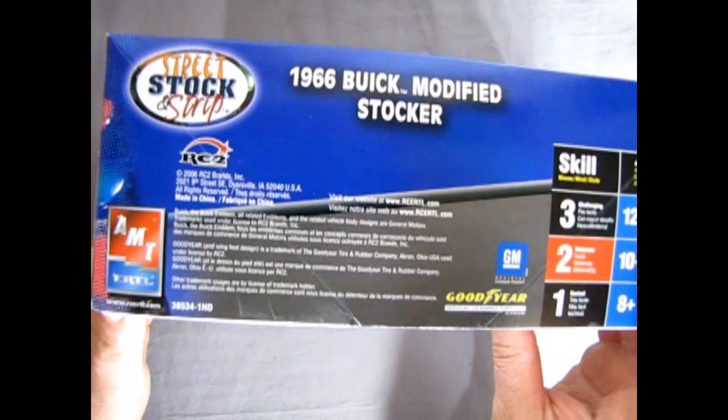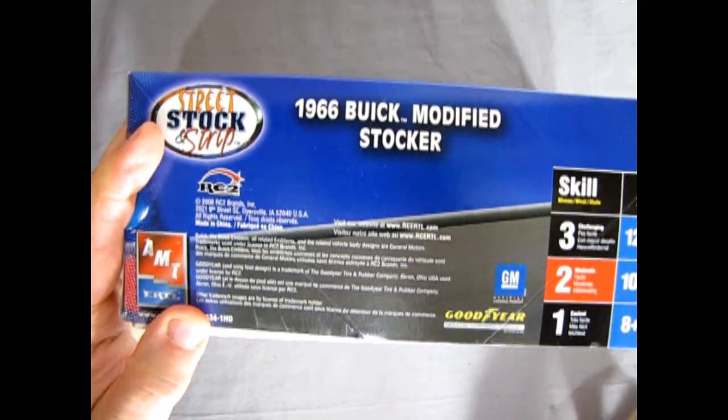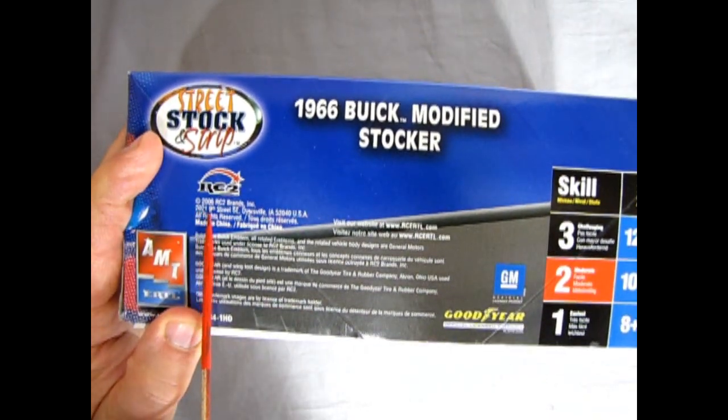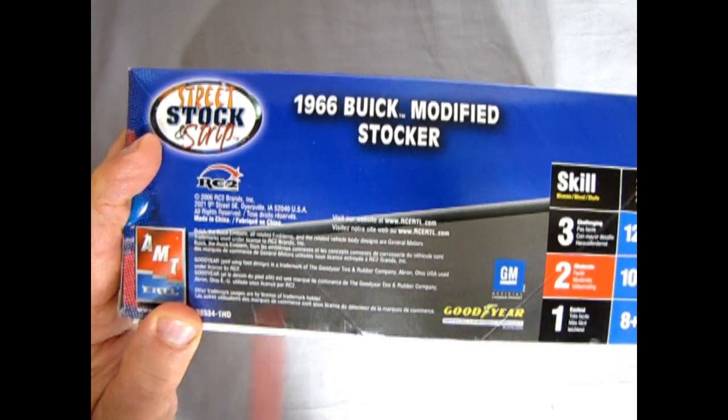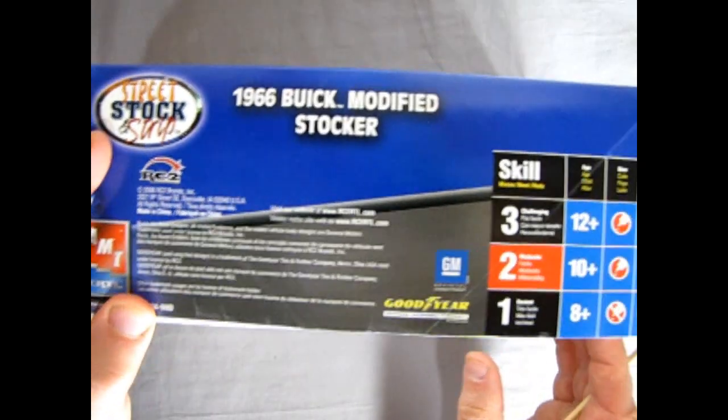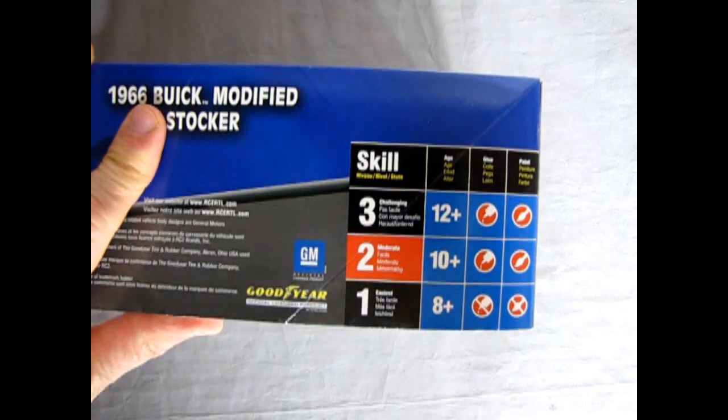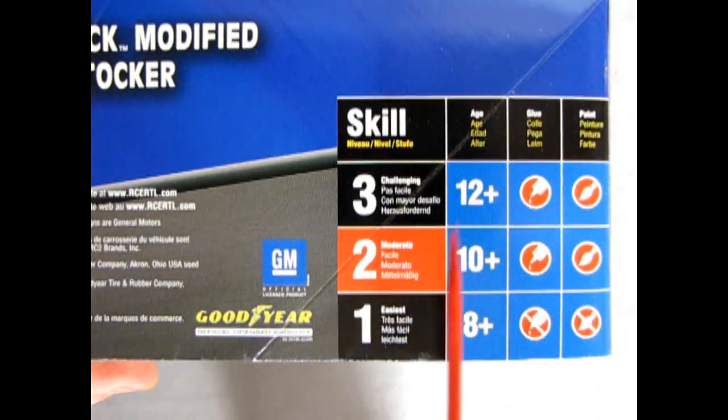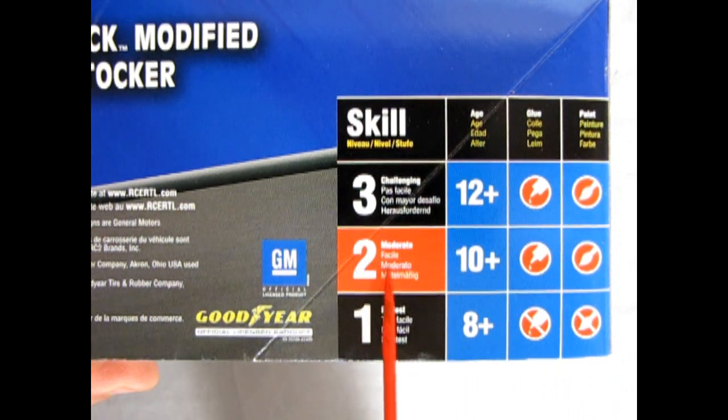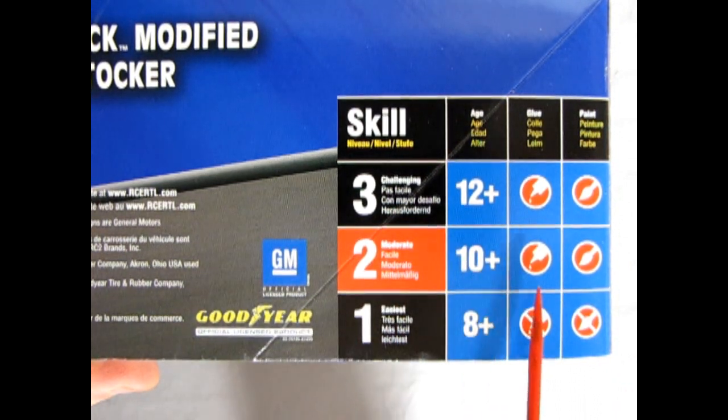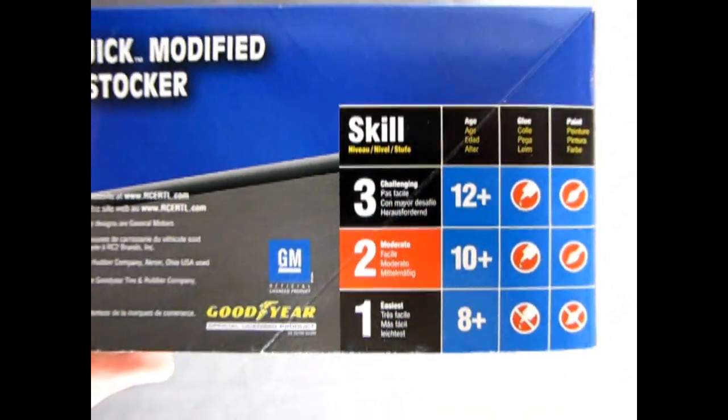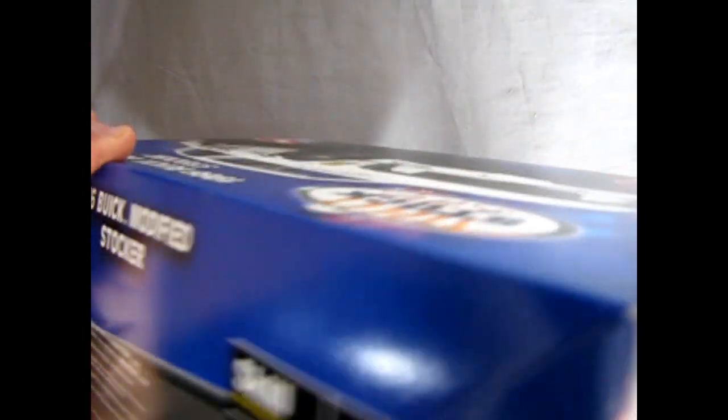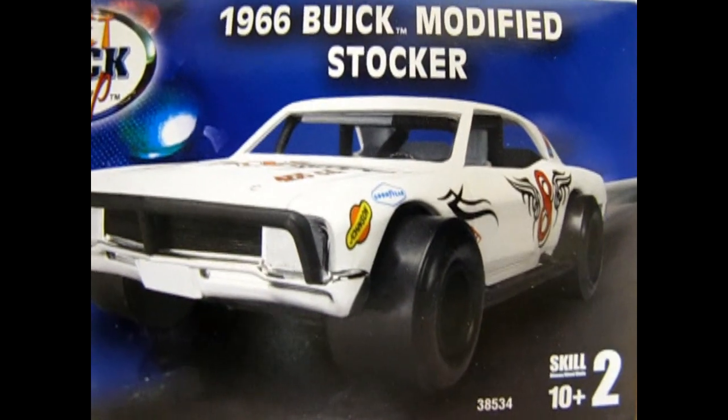And you see on this side of course is the same as the front. And here we get our kit part number 38534 and our barcode. And then if we turn it down to this side, we can see that this kit again came out in 2006 just like the other four in that series. And we have a sponsorship by GM and Goodyear.